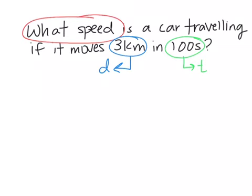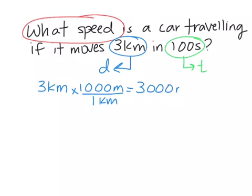Kilometers into meters is an easier conversion. So we're going to take three kilometers and we're going to multiply that by our conversion factor of 1,000 meters per one kilometer, and we get 3,000 meters.